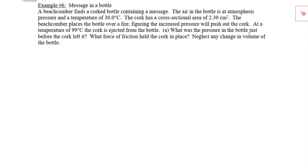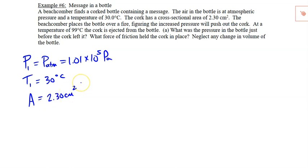We got air in a bottle at atmospheric pressure. So I'm going to say P1 is atmospheric pressure, which we'll say is 1.01 to the power of 5 pascals. We have the temperature initial is 30 degrees Celsius. The cork has a cross-sectional area of 2.30 centimeters squared. And the beachcomber places the bottle over fire figuring that the increased pressure will cause the cork to pop out.